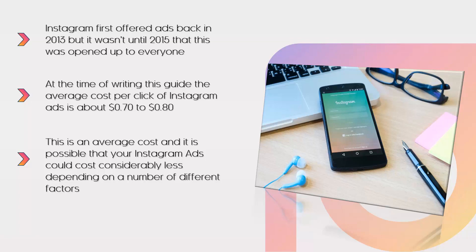There are five different Instagram ad formats: one, stories; two, photos; three, videos; four, carousel; five, collection. Each one of these formats is interlaced with Instagram user feeds and stories, ensuring that the Instagram user has a non-disruptive experience on the platform.